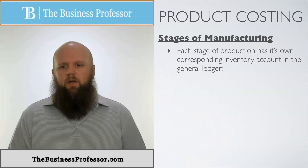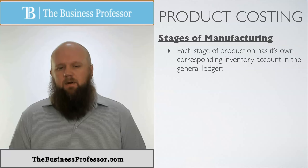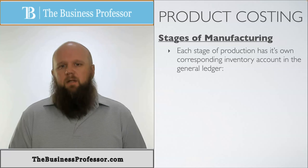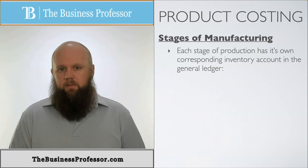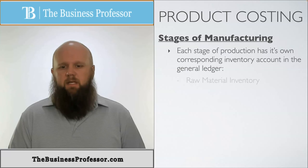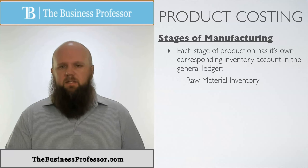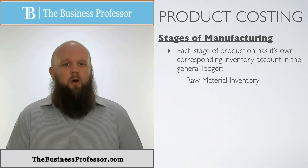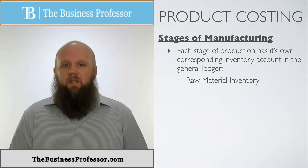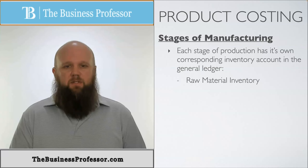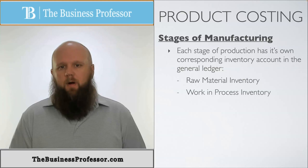Each of these three stages has its own inventory account in the general ledger. This applies specifically to a manufacturing business, not a retail company. The first inventory account, corresponding to work not started, is called raw materials inventory — the raw material sitting in the back of the warehouse that hasn't been brought up yet. From a percentage scale, this is 0% complete; it hasn't even been started.